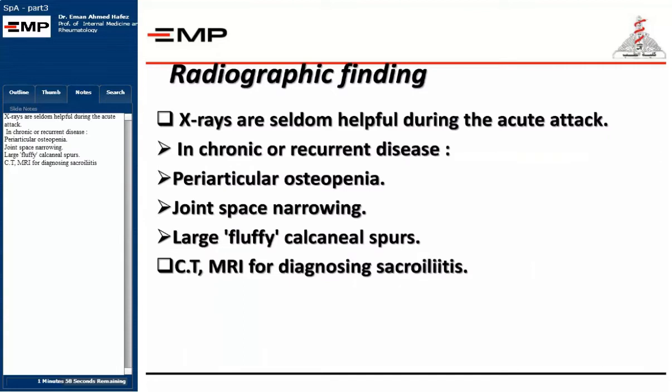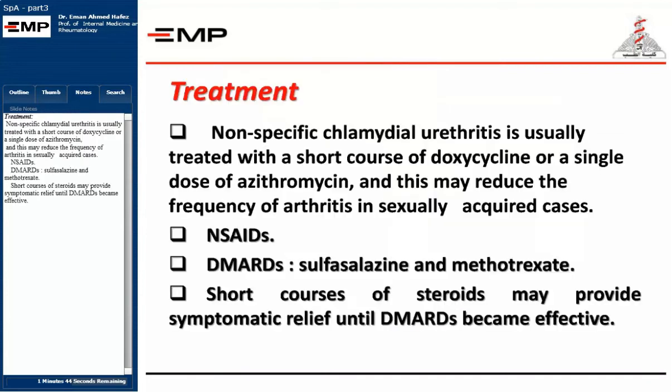In chronic or recurrent disease, X-ray findings include periarticular osteopenia, joint space narrowing, and large fluffy calcaneal spurs. CT and MRI are used for diagnosing sacroiliitis and calcaneal spurs.